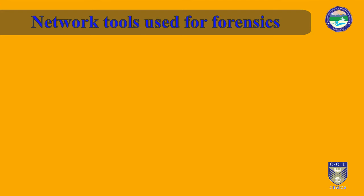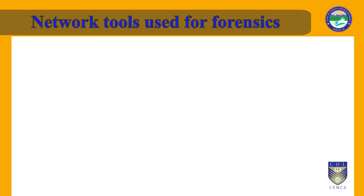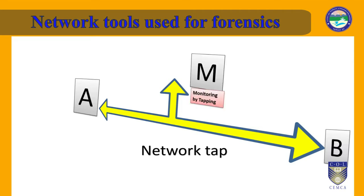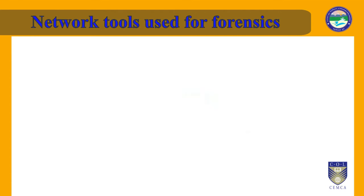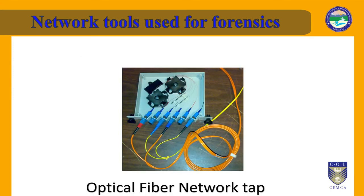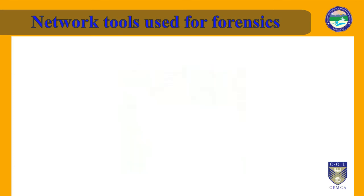One of the network tools used for forensics is called a network tap. A network tap is a hardware device which provides a way to access the data flowing across a computer network. It is desirable for a third party to monitor the traffic between two points in the network. If the network between points A and B consists of a physical cable, a network tap may be the best way to accomplish this monitoring. The network tap has at least three ports: an A port, a B port, and a monitor port. A tap inserted between A and B passes all traffic through unimpeded but also copies that same data to its monitor port, enabling a third party to listen.